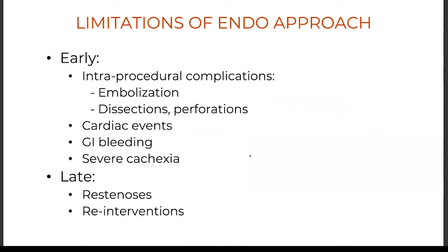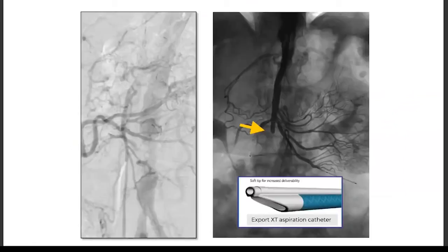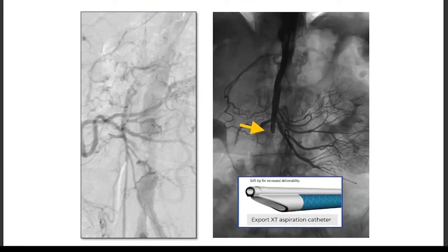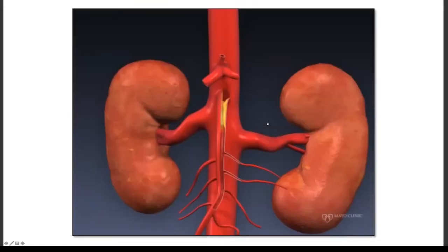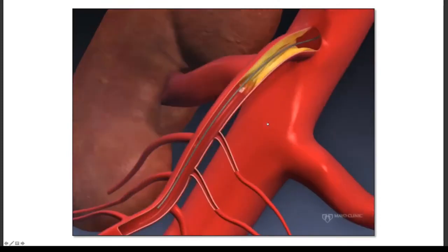There are important limitations of the endovascular approach: early complications and late limitations with re-interventions. One early complication that caught my attention was the risk of embolization. I had a difficult case with a long-segment flush occlusion that I recanalized via the IMA with a microcatheter. When I was done, there was major embolization of the main trunk of the SMA; I used an export aspiration catheter and we were able to open the SMA. This prompted me to evaluate whether filters could help in challenging cases.